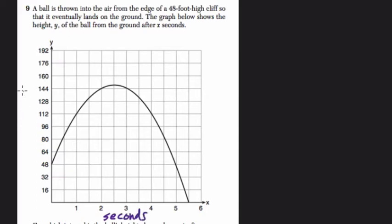So we have x, seconds, and y is our height. So here is at 48, at 0 seconds, that's our cliff right there. The ball is thrown up, it peaks around here, so 2 1/2 seconds, a little bit over 144 feet. And then about 5 1/2 seconds, it hits the ground.